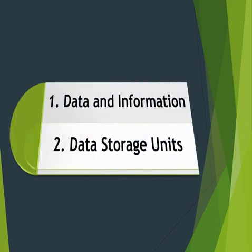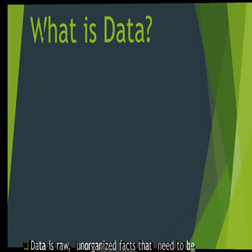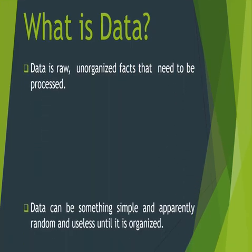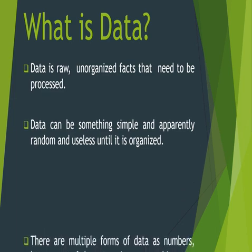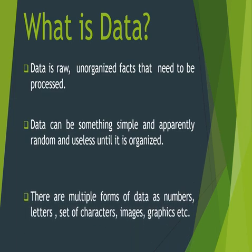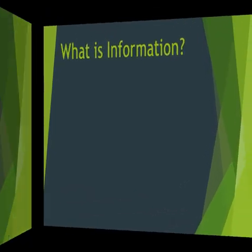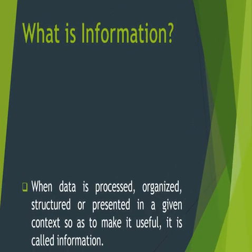In this video we will learn about the following topics: first is data and information, and second is data storage units. So, what is data? Data is raw, unorganized facts that need to be processed. Data can be something simple and apparently random and useless until it is organized. There are multiple forms of data: numbers, letters, sets of characters, images, graphics, etc.